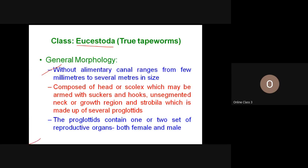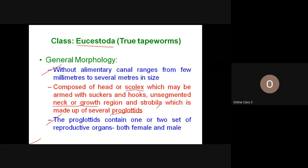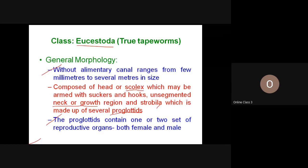Each proglottid contains one or two sets of reproductive organs. In terms of general morphology, there is a scolex — the head — connected to a neck region, followed by segments known as proglottids. A collection of proglottids is known as the strobila. The body components are: the scolex, the neck or growth region, and the proglottids.